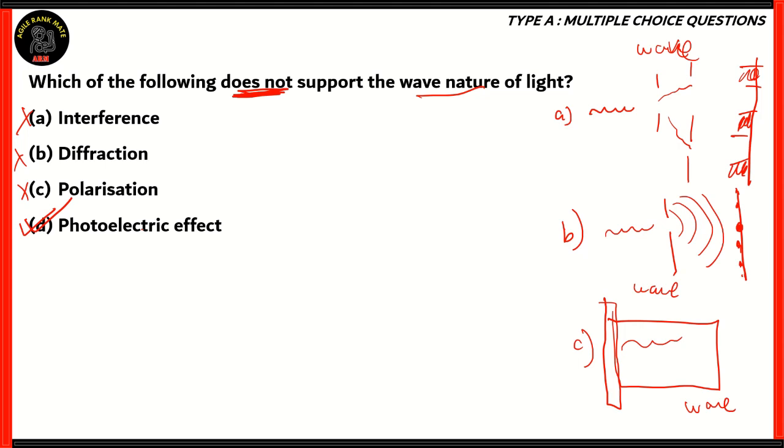That makes option D, the photoelectric effect, the right answer. In the photoelectric effect, you would know that when light rays strike an object, an electron is released. In order for this to happen, you need momentum in light, and momentum is usually a property of particles. So if you had used the particle nature to explain photoelectric effect, it would make sense. So therefore, option D, the photoelectric effect, is the right answer.